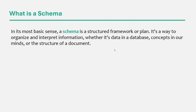In its most basic sense, a schema is a structured framework or plan — a way to organize and interpret information. That information can be data in a database, a concept in your mind, or the structure of a document. A schema is simply a structure that tells how data should look. When working with MongoDB, you have several ways in which you can define a schema.